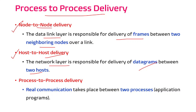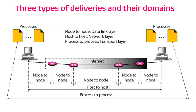Node-to-node delivery happens between two neighboring nodes; host-to-host delivery happens between two hosts from one end to another. Process-to-process delivery is where real communication takes place between two processes for specific application programs. At any given moment, a number of processes can be opened at any system, and similarly at the destination host also, there may be a number of processes open. Here I have pictured the three types of deliveries and their domains.